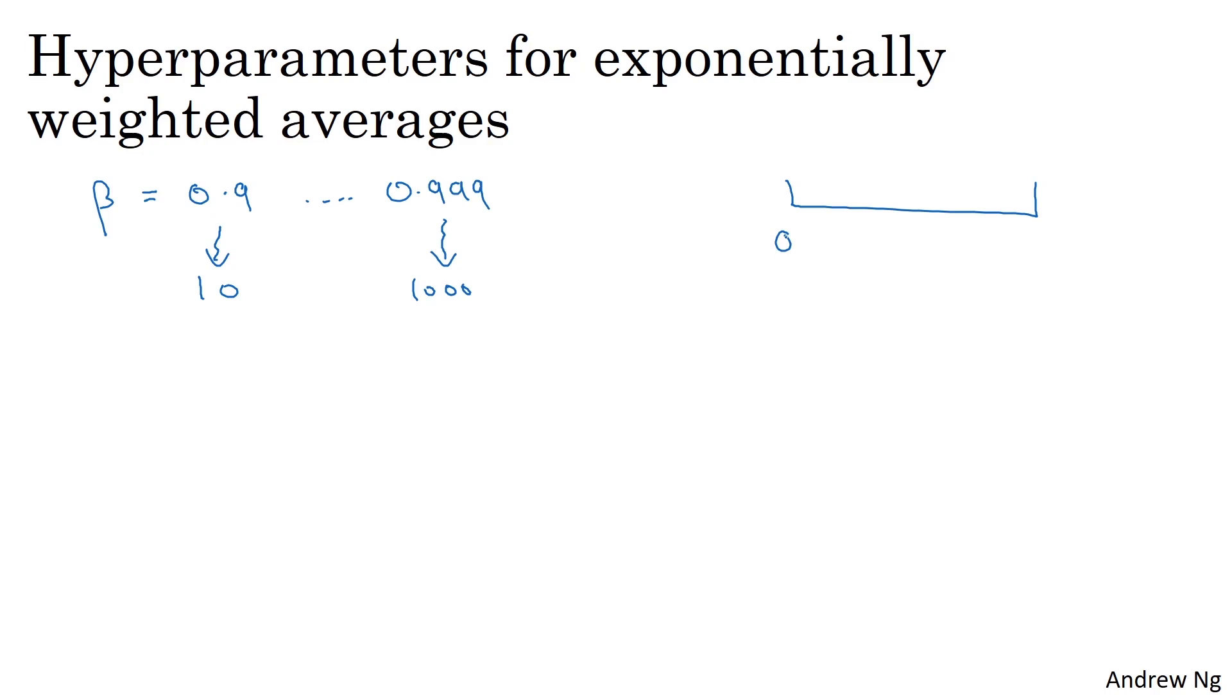So similar to what we saw on the last slide, if you want to search between 0.9 and 0.999, it doesn't make sense to sample on the linear scale, right? Uniformly at random between 0.9 and 0.999. So a better way to think about this is that we want to explore the range of values of 1 minus beta, which is going to now range from 0.1 to 0.001. And so we'll sample 1 minus beta taking on values from 0.1 to 0.001.